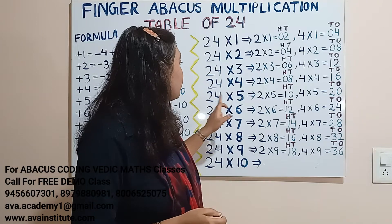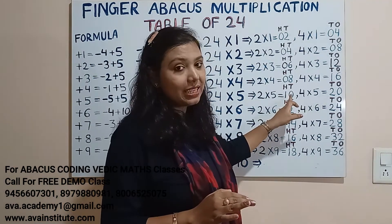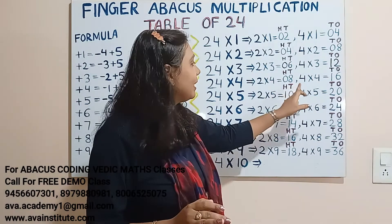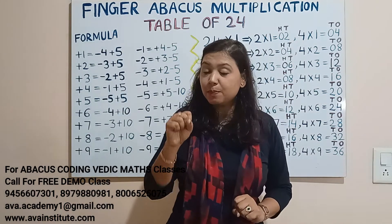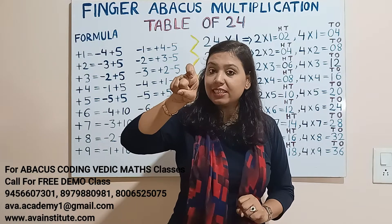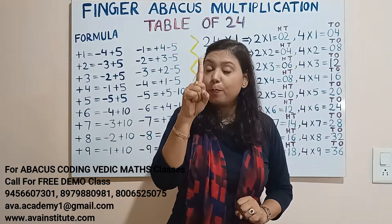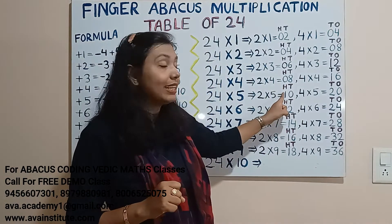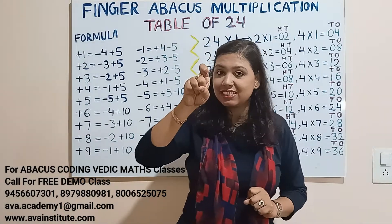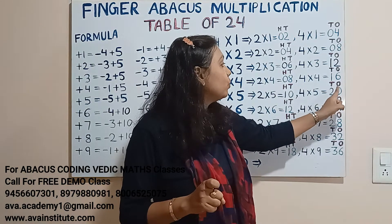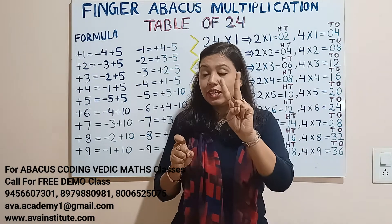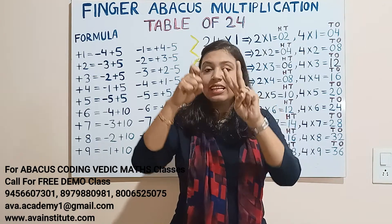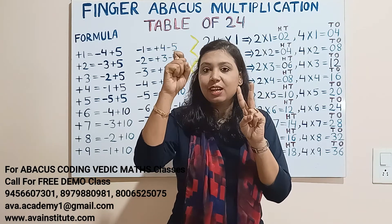Next, 24 fives are: 2 fives are 10 — this is already a 2-digit number, so we don't put a zero. We simply write 10: in hundreds we represent 1, in tens we represent 0. To represent 1 in hundreds, we bend the finger — bent this way is 100, open is 1, bent halfway is 101. Now 4 fives are 20 — in tens 2, in ones 0. In tens we represent 2, in ones we represent 0. So the answer is 120.